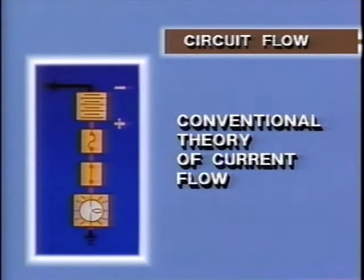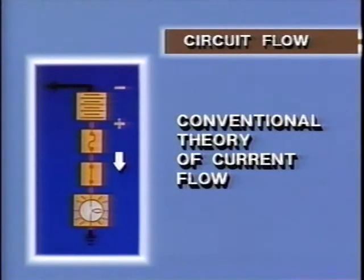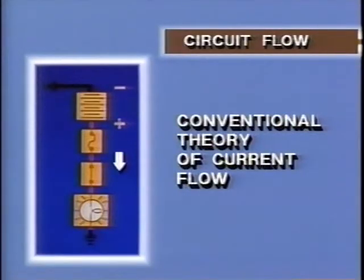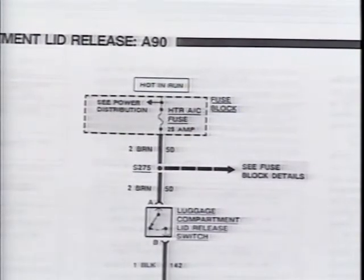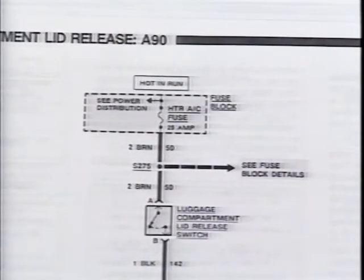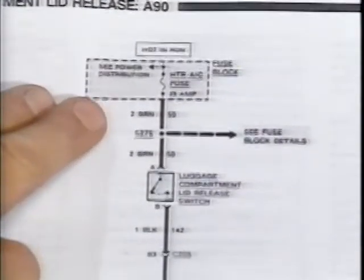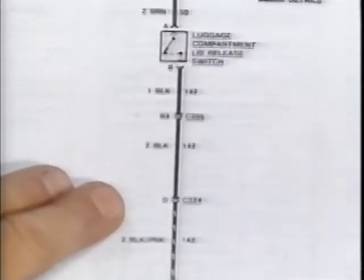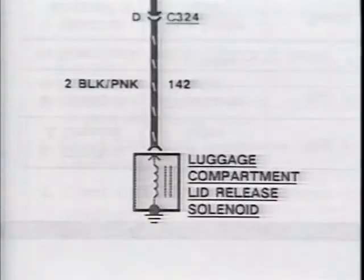From a practical view, the conventional theory of current flow describes power flow. In conventional theory, power flows from the positive terminal to the negative terminal. Holes are sometimes used to describe the positive ions flowing from the positive terminal to the negative terminal. In Buick Service Manual Section 8A Wiring Diagrams, power flows from the positive terminal of the power source at the top of the page through the circuit to ground at the bottom of the page, where the ground completes the circuit at the negative terminal.